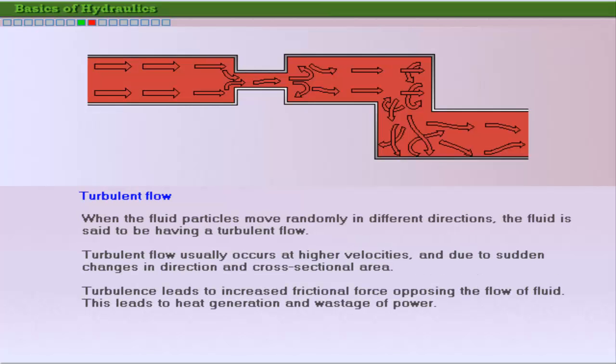When fluid flows in such a manner that fluid particles don't move in a straight line, or parallel to the flow direction, then this flow condition is called turbulent flow. Turbulent flow can be caused by high flow velocities, or by abrupt changes in the direction or cross-section of the pipe. Turbulence leads to increased friction in the pipe, increasing operating pressure and waste of power in the form of heat generation.